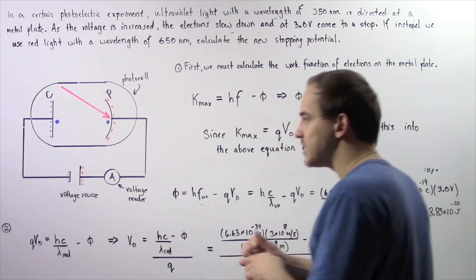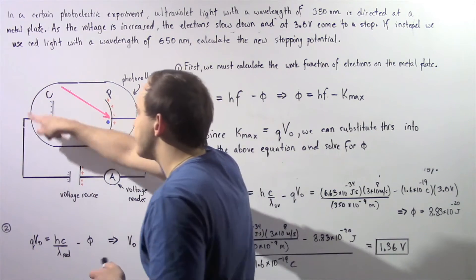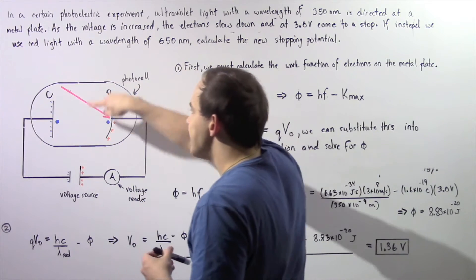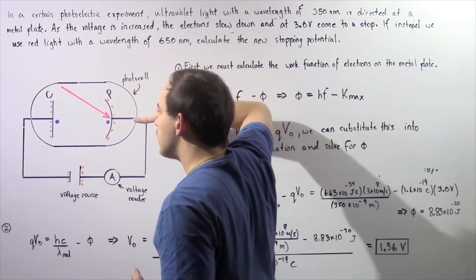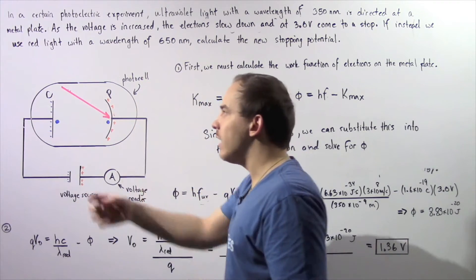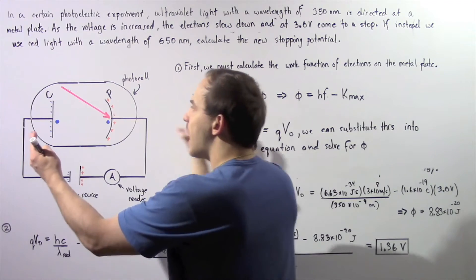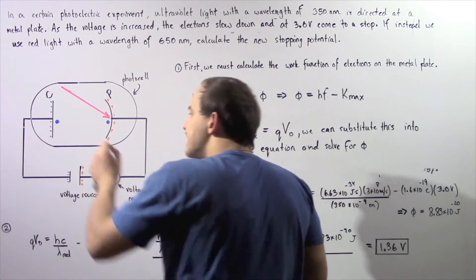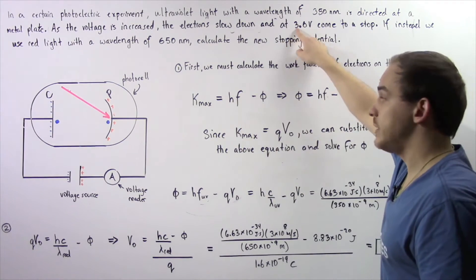So basically what happens is this voltage source creates a negative charge on plate C and a positive charge on plate P, and as the electron moves across, it is repelled by the negative charge on this plate and that stops the electron. Now the electron will only stop if the voltage is 3 volts.